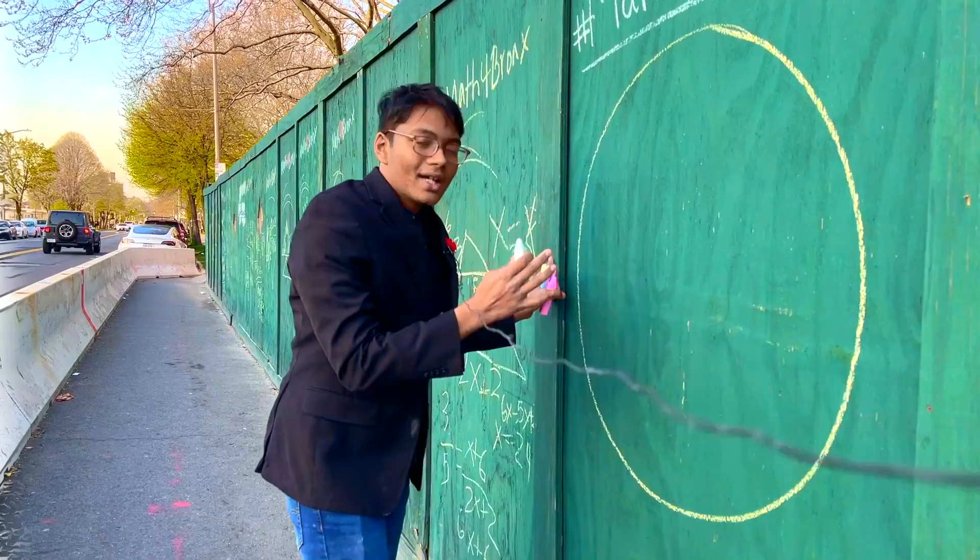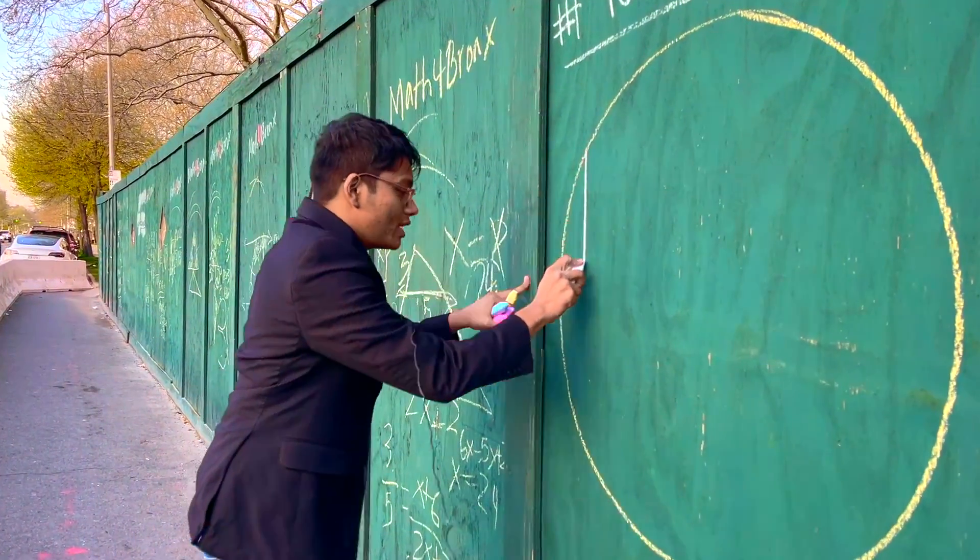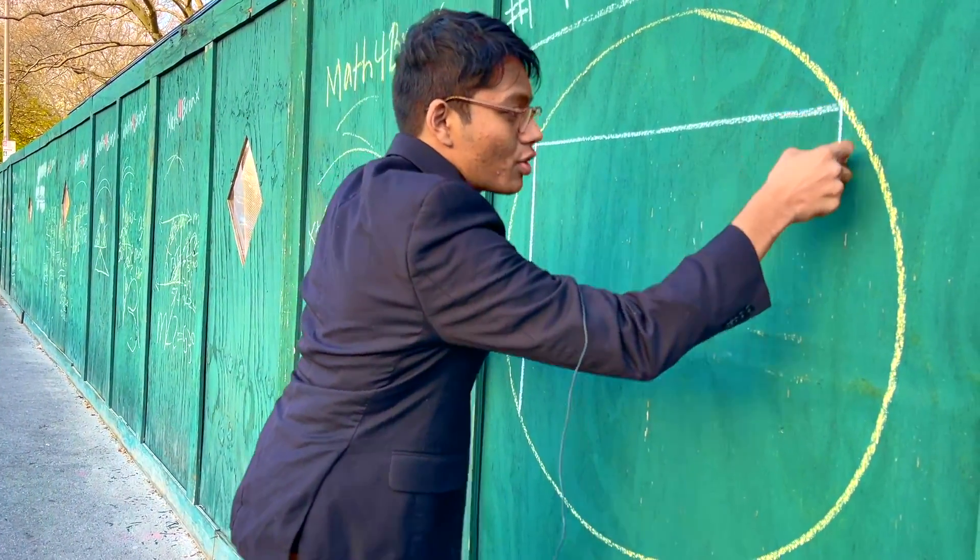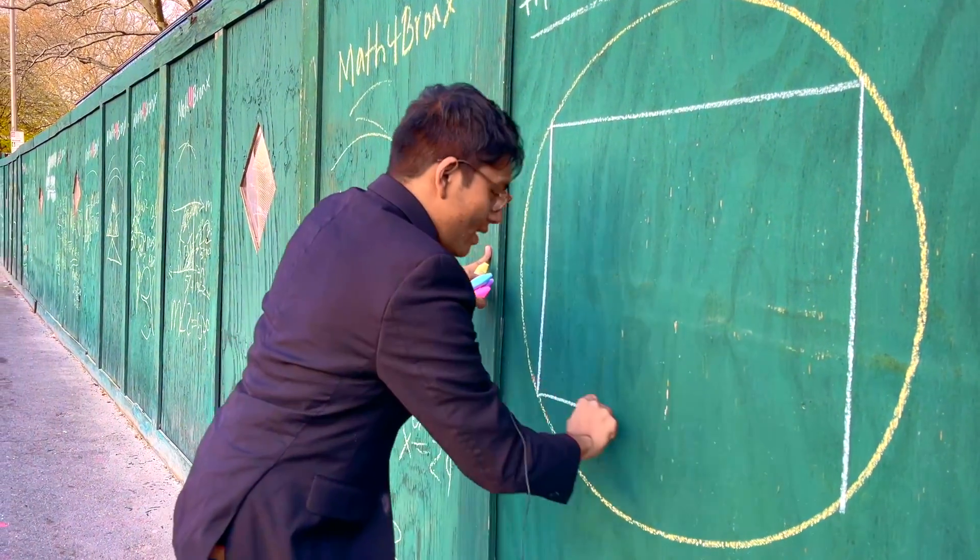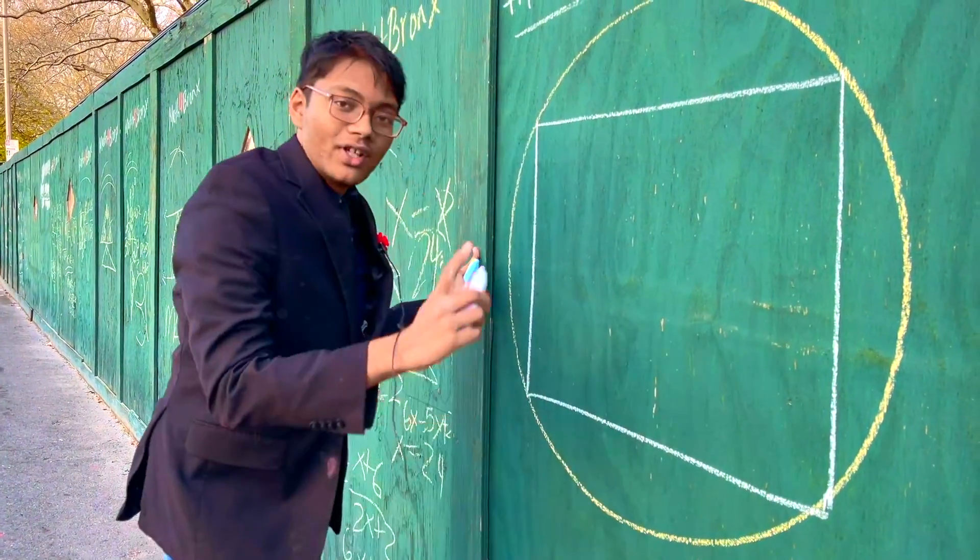And so because of symmetry, our cube is going to touch every single corner. Every corner of our cube is going to touch the surface of the sphere once.